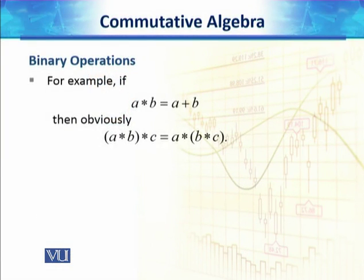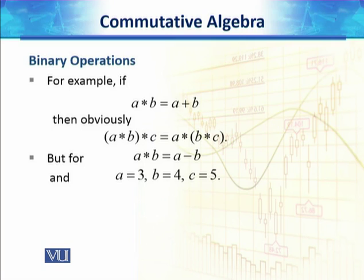For example, if a star b is equal to a plus b, then obviously if we compute (a star b) first and then c, or we compute (b plus c) first and then a, the answer will be the same.